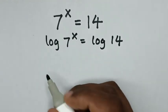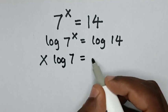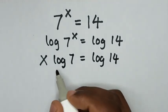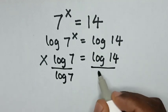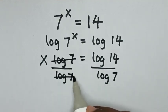Then the power of x will move to the base. So it will be x log 7 equals log 14. Then we divide by log 7 on both sides. So this and this will cancel.